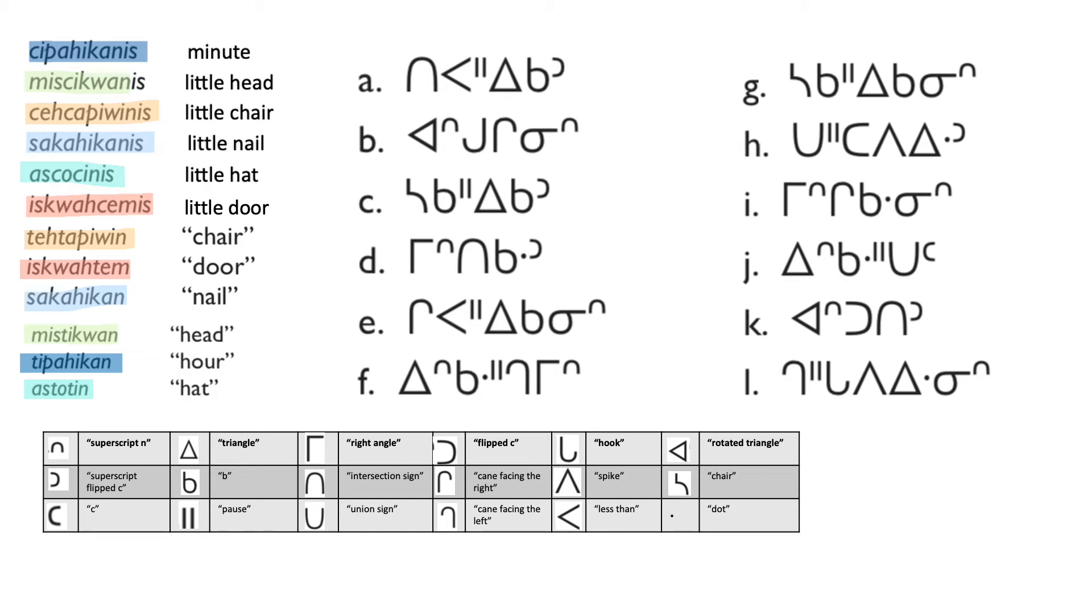A syllable is just one unit in pronunciation. For example, there are three syllables in the word minute, which are mi, n, and t.